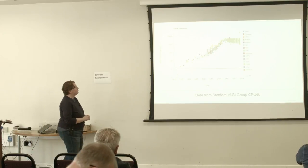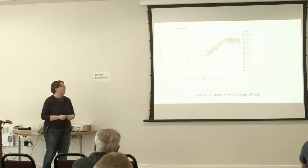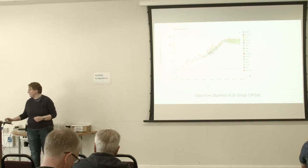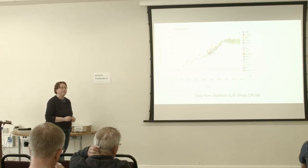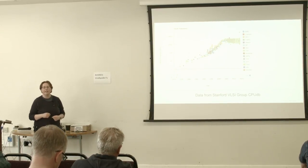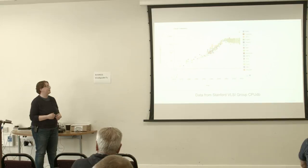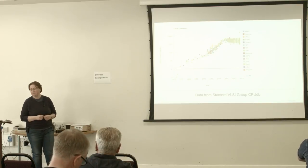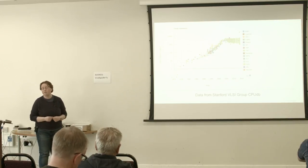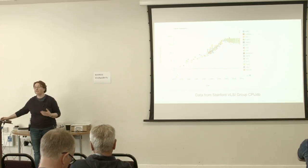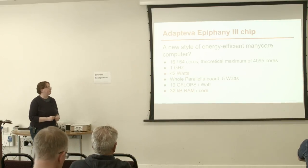Why is this important? Well, processors have really come to the end of what manufacturers can do to make them much faster. Looking at clock frequency over time, it's sort of reached a plateau. If you want your code to go faster now, you've either got to write your software differently, have lots of machines, have lots of cores within your machines, or use something like a GPU — basically find other ways rather than just hoping a chip manufacturer will bring out a better chip.